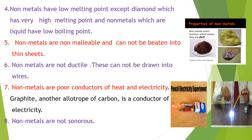Non-metals are non-ductile and cannot be drawn into wires. Non-metals are poor conductors of heat and electricity. However, graphite, the allotrope of carbon, is a good conductor of electricity and is used in making electrodes. The pencil we use has a graphite rod inside, which is also a conductor.